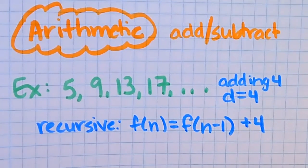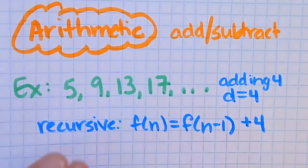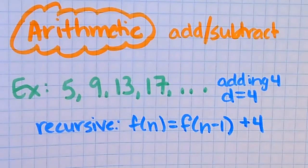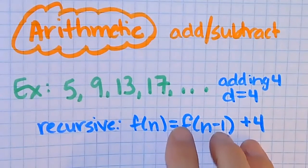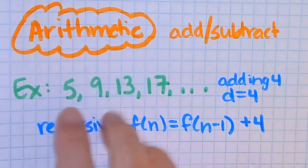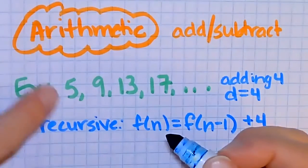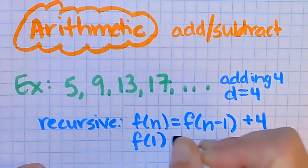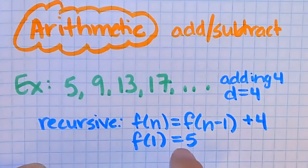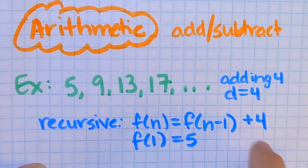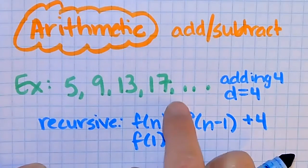The one extra thing you need to give me is I need to know which particular sequence of adding four this is. This just says I'm adding four — I don't know exactly what the sequence is. So I need to know what to start with. This term here is your first term; we call that F of one, and F of one is five. This means your first term is five. So I'm going to start with five and keep adding four to generate that sequence.